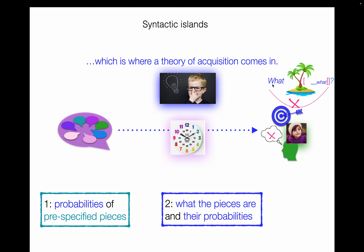Let's talk about our two theories of acquisition that we're going to investigate. One is where the child is learning probabilities of pre-specified pieces of structure, and the second is learning not only the probabilities of these pieces but in fact what the pieces actually are from the input.